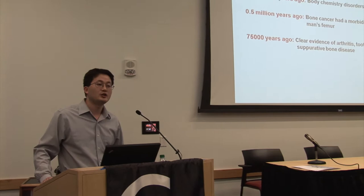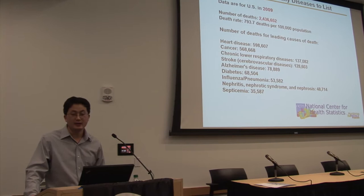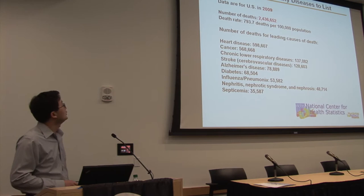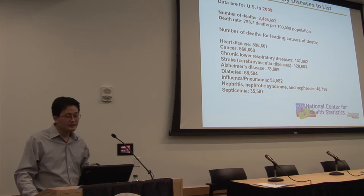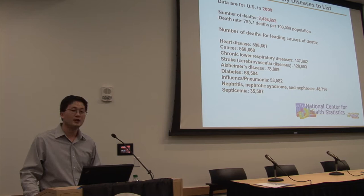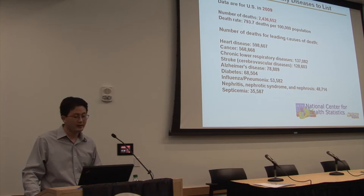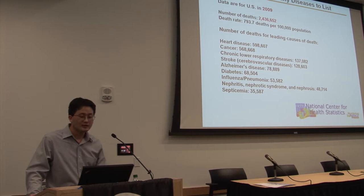Nowadays, with the advancement of diagnostic tools and equipment, more and more diseases have been disclosed. According to recent statistics from the National Center of Health Statistics, in the United States in 2009 the death number was about 2.4 million. The number one killer is heart disease, with nearly 600,000 deaths, followed by cancer at about 568,000 deaths, and then stroke, Alzheimer's disease, diabetes, and many others. This is a brief review of the history of disease.